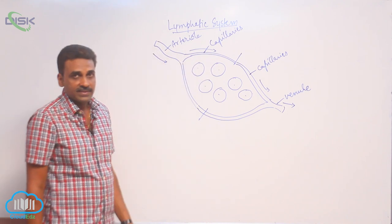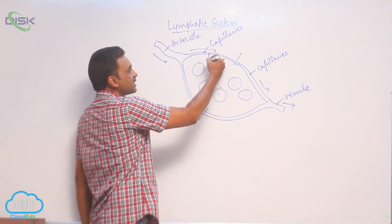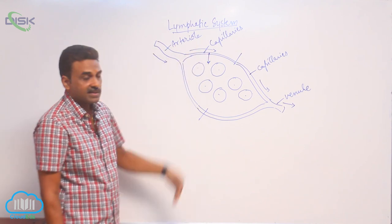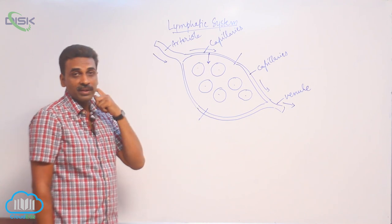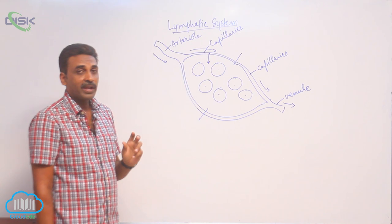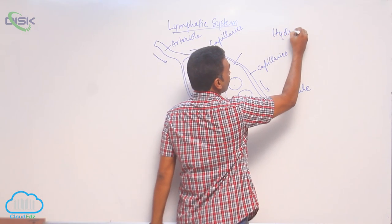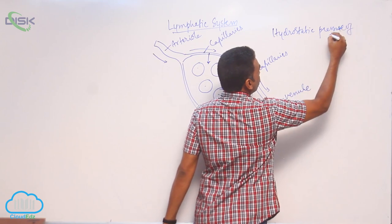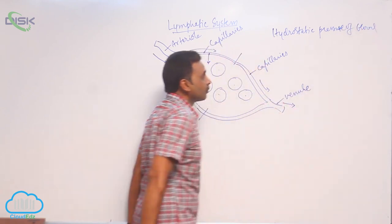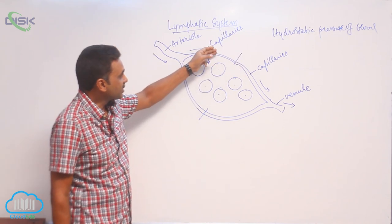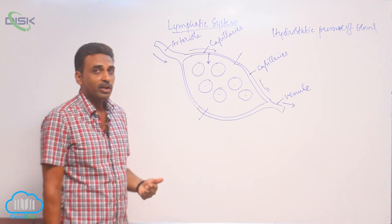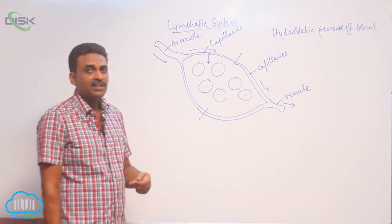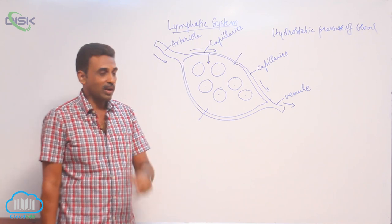When blood is passing through the capillaries, some substances are filtered outside from the capillaries of the arterioles. The filtration process is controlled by the hydrostatic pressure of blood. Because of the hydrostatic pressure, some substances are filtered here. It includes water, solutes, organic as well as inorganic substances.